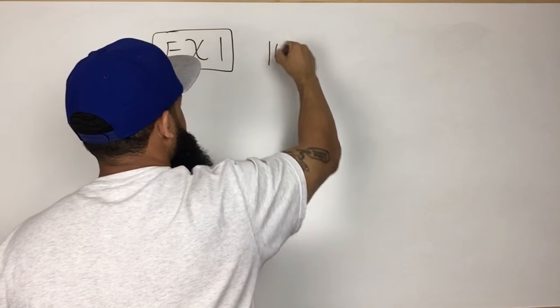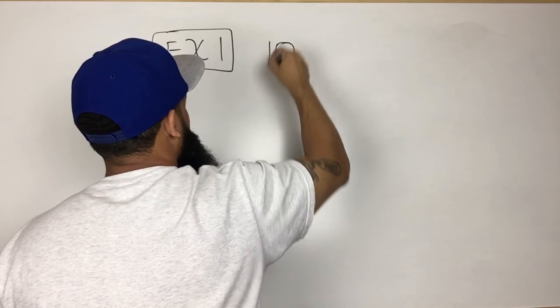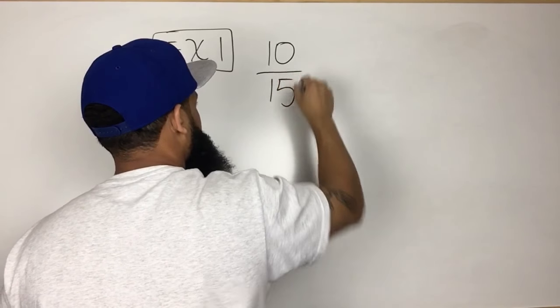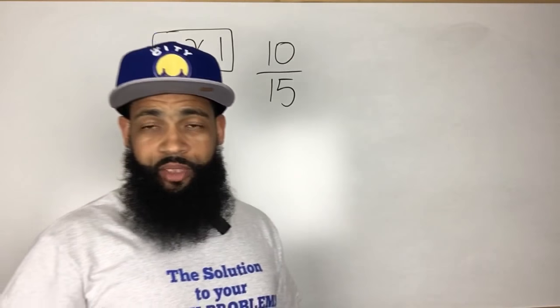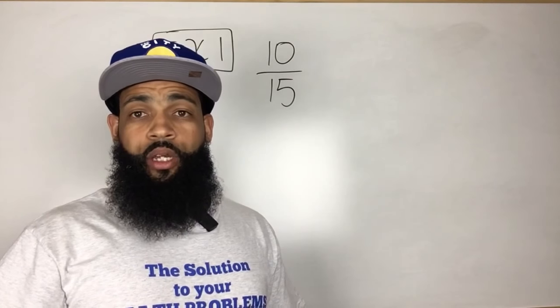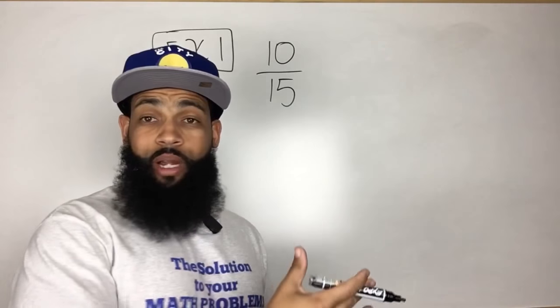So if I have the fraction 10 over 15, what I'm trying to do is figure out how I can rewrite this fraction using smaller numbers but they have the same value.